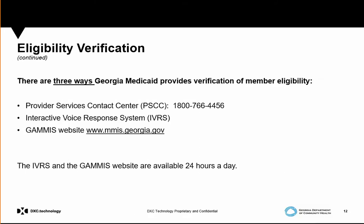There are three ways to check eligibility. You can contact our call center at 1-800-766-4456, utilize the IVR system, or wait to speak to a specific person who will verify the eligibility in detail. Or you can check eligibility directly on our website at www.mmis.georgia.gov. The IVR and the Medicaid web portal are available 24 hours a day, seven days a week, unless system updates are in progress.